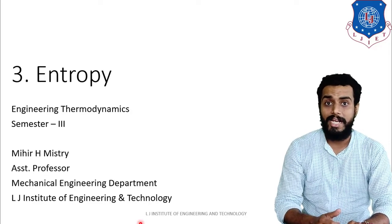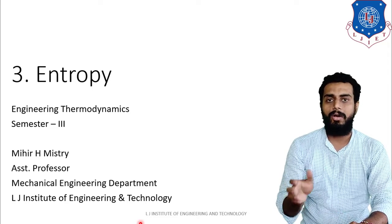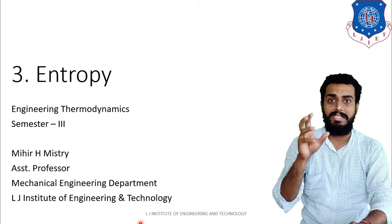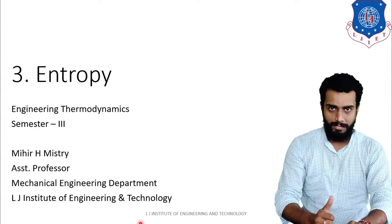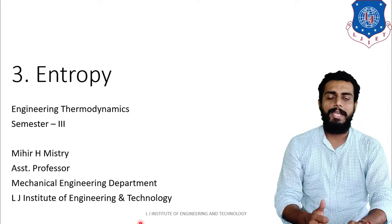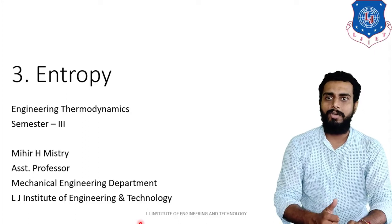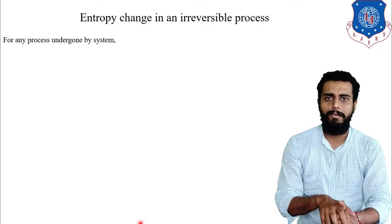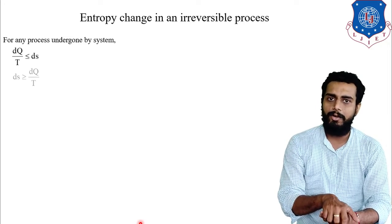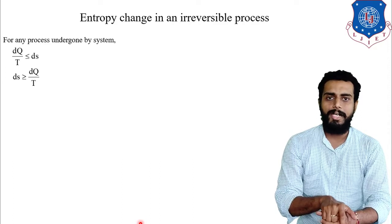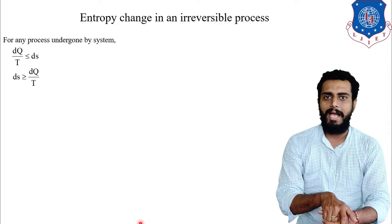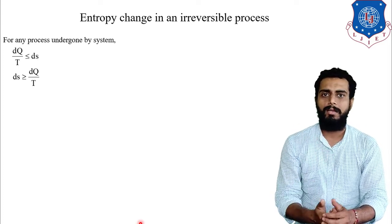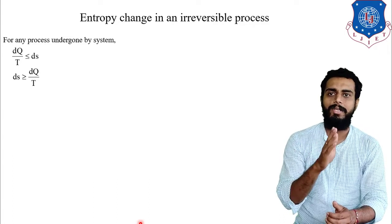If you recall the limitations of the first law of thermodynamics, we discussed that the first law does not give you any direction. So from the inequality of Clausius, we can judge whether a cycle is possible or impossible. That is the important significance of the inequality of Clausius. Now today we are going to discuss entropy change in an irreversible process. We will carry forward the previous correlation — the inequality of Clausius — from which we proved that for any process undergone by the system, we can write dq/T ≤ dS, or rearranged: dS ≥ dq/T.